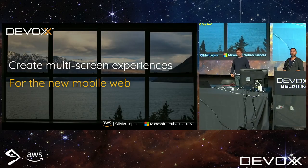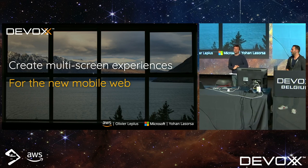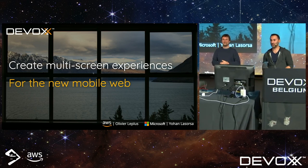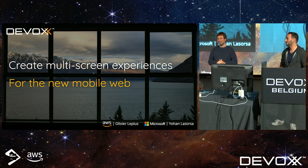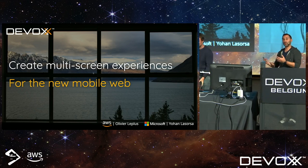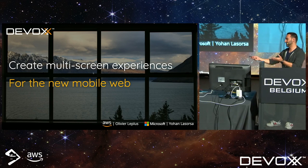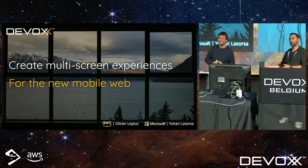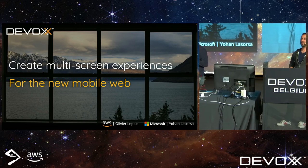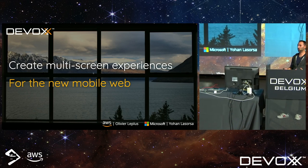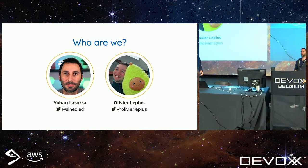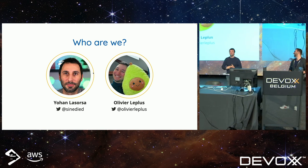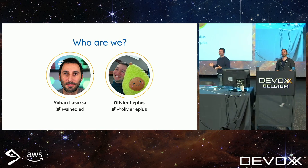Welcome everyone, thanks for attending this talk after this journey of hands-on workshops and all these talks. We'll be talking, Olivier and me, about using the new web APIs for foldable devices — these shiny new multi-screen foldable devices and laptops that we now have and can use with the web. My name is Yohan and I work as a developer advocate at Microsoft, and my name is Olivier and I work as a developer advocate for AWS.